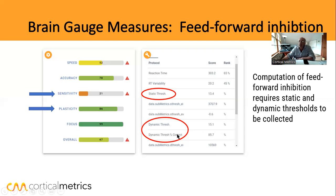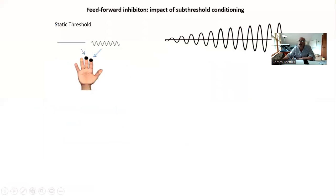You also need to be aware of the dynamic threshold percent correct — those are the measures that are important when looking at feed forward inhibition. Static threshold comes from performing an amplitude discrimination task with one of the values being zero.